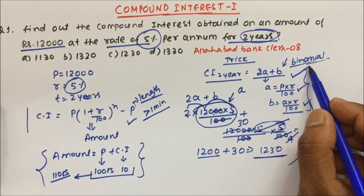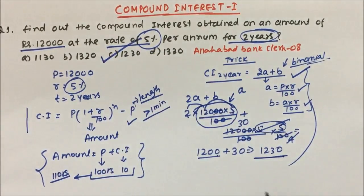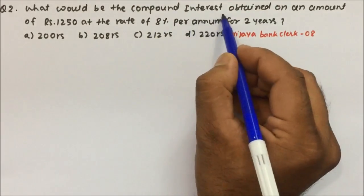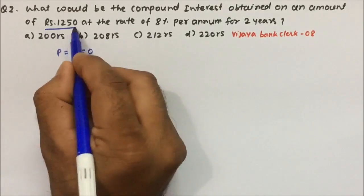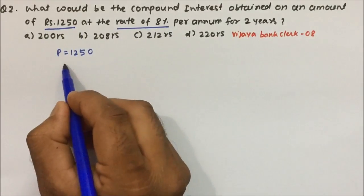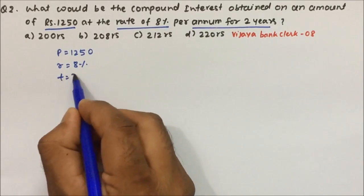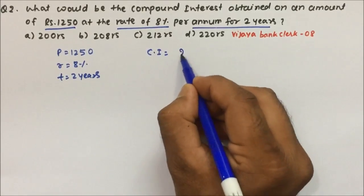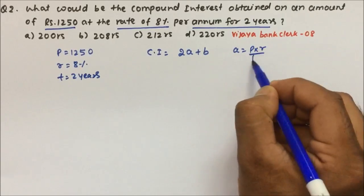Question number two: what would be the compound interest obtained on an amount of Rs.1250? So principal is 1250 at the rate of 8%. So rate is also given, 8%, and time is what? Two years. So again we'll use the same formula. Compound interest for two years is 2a plus b, where a equals P into R by 100 and b equals a into R by 100.